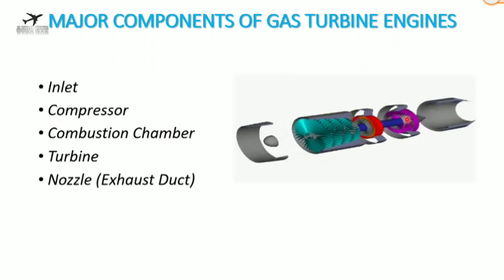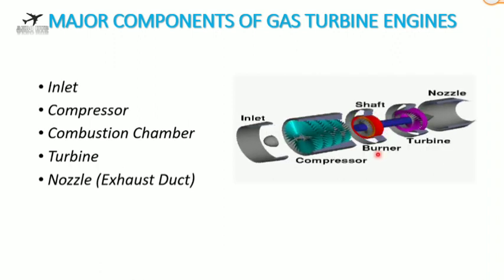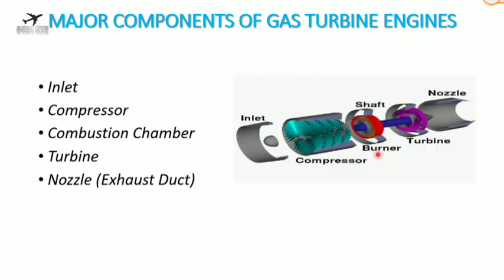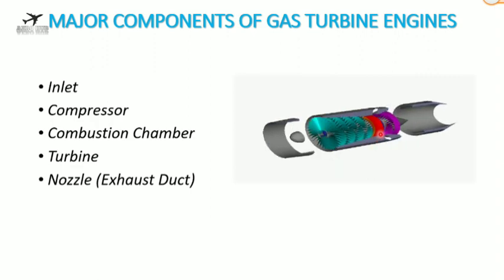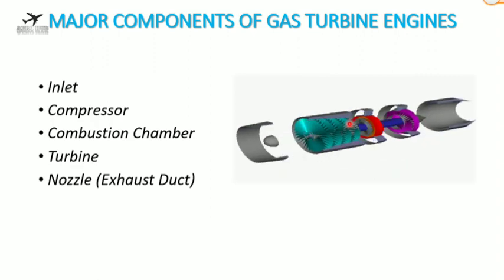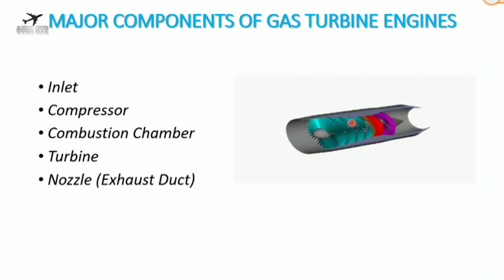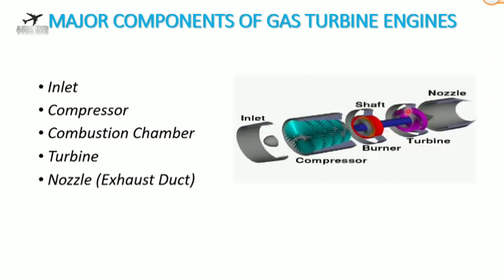The burned gases are then expanded in the turbine. The function of a turbine is to drive the compressor and engine accessories — kinetic energy is converted into mechanical energy. In a typical jet engine, about 75 percent of the power produced internally is used to drive the compressor, and the remaining power is used to produce thrust.